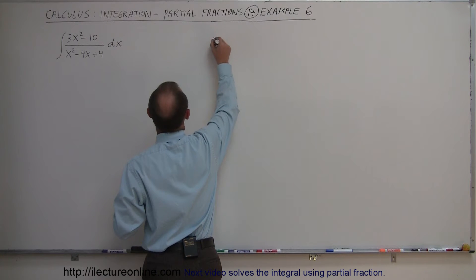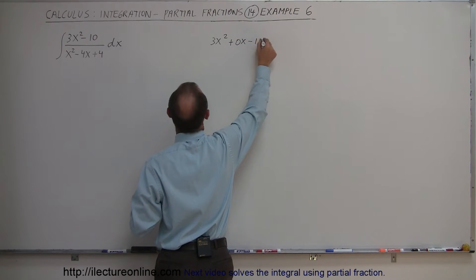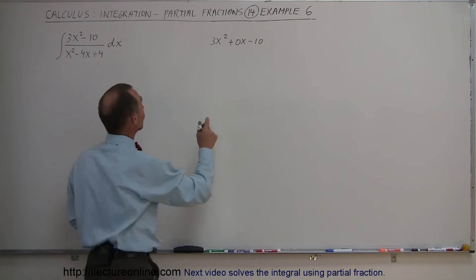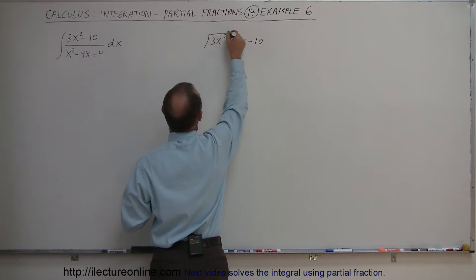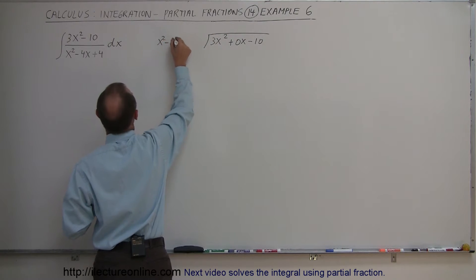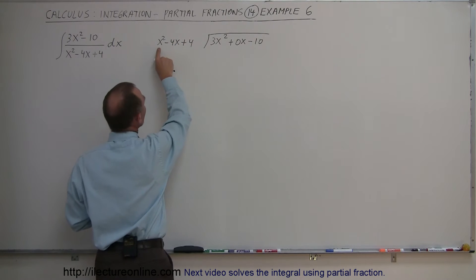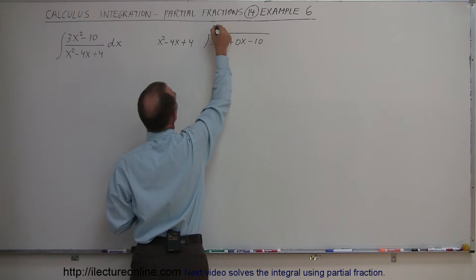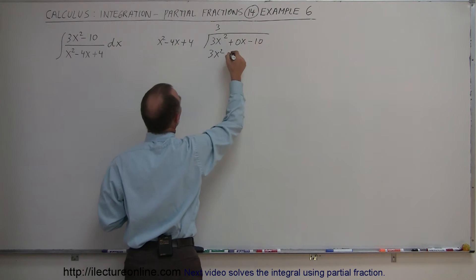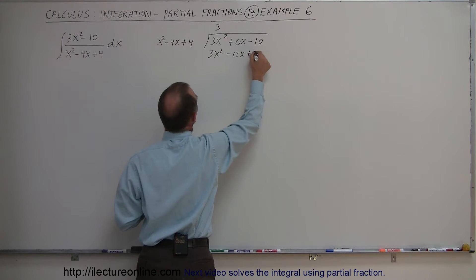Let's divide the denominator into the numerator. The numerator is 3x squared plus 0x minus 10 — we have to put the missing term in there to make it easier to do the division — divided by x squared minus 4x plus 4. So x squared goes into 3x squared 3 times. 3 times x squared is 3x squared; 3 times minus 4 is minus 12x; 3 times plus 4 is plus 12.